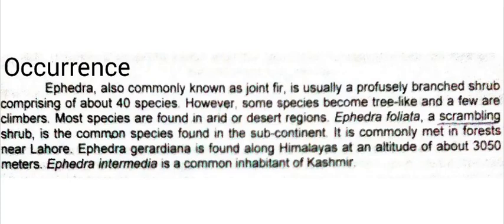Ephedra foliata is a scrambling shrub. A scrambling shrub is one which is not an efficient climber but has flexible climbing stems. This species is mostly found in the subcontinent and is commonly present in the forests near Lahore.